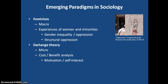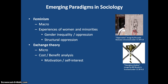Rational choice or exchange theory is a micro-sociological perspective. This paradigm is looking at the thinking and behavior of people. Using this perspective, we understand how people make decisions based on cost-benefit analysis — evaluating what is going to cost in time, money, or resources, and what is the benefit of doing it or not, and we make decisions based on the consequences we anticipate.